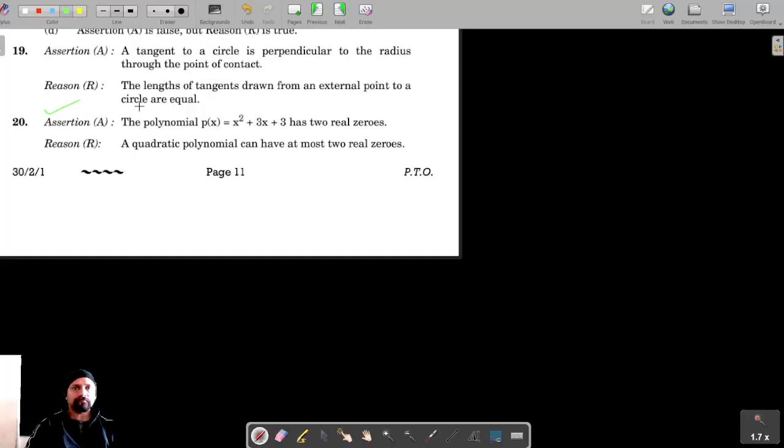Question number 20. It's given that for the assertion, the polynomial p(x) equals x squared plus 3x plus 3 has two real zeros. We have to check that.